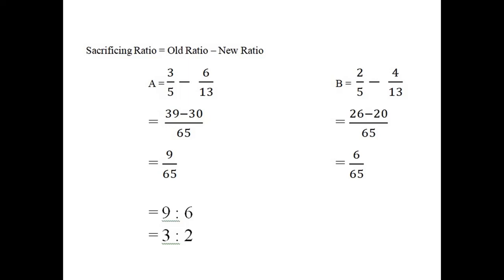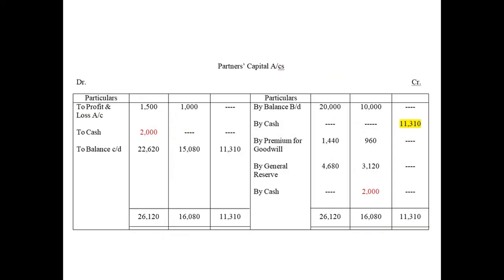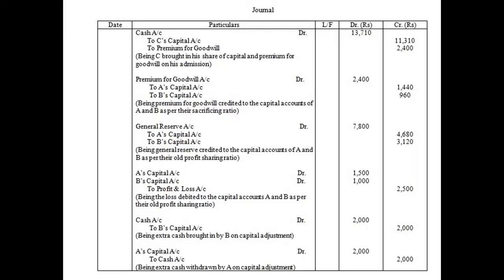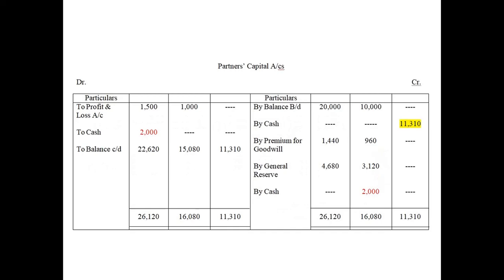In question number 70, the new ratios are already provided, so we just calculate the sacrificing ratio which is 3:2. This is our main problem area because the other problems are easy. First of all, I notice I have not written the names of the partners A, B, C — let me correct that.